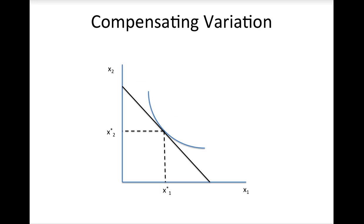The two ways to more accurately measure consumer surplus are compensating variation and equivalent variation. These are two ways to measure the same thing: how much better or worse off a consumer or group of consumers is as a result of some change in market conditions. For the discussion to follow, we will focus on a price increase, which we know will make a consumer worse off. The compensating variation is simply the amount of money we'd have to give that consumer to compensate him or her for the price increase.